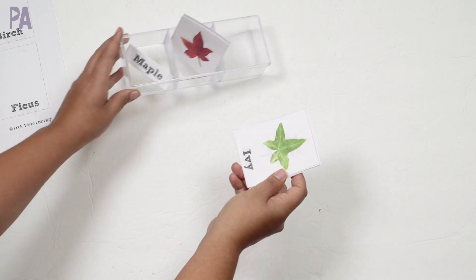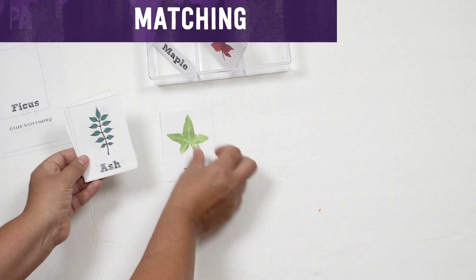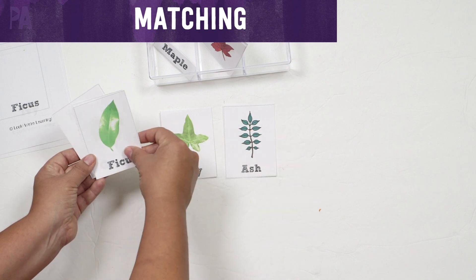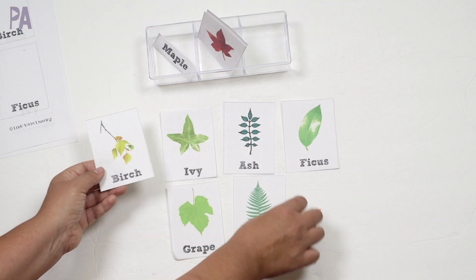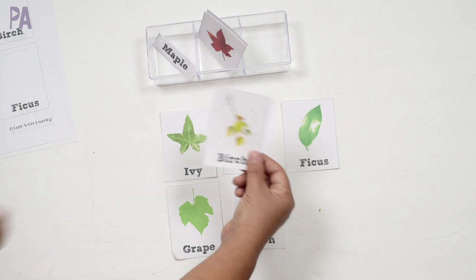So you can do this several different ways. My first recommendation is to print out two copies of these and do a matching game for your youngest kids. A really simple matching game and learning all of the names of the leaves and what they look like.